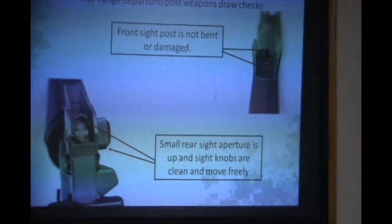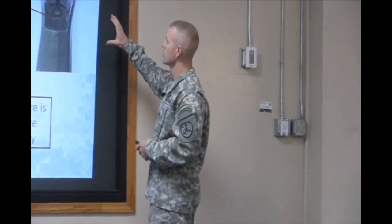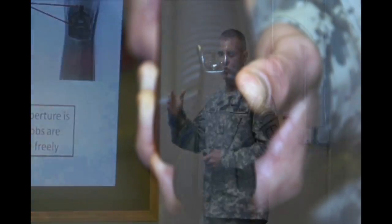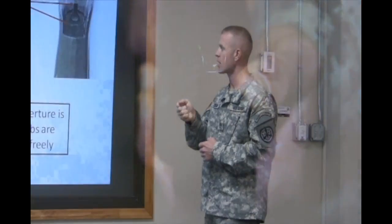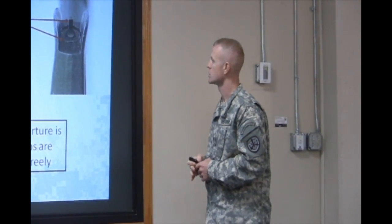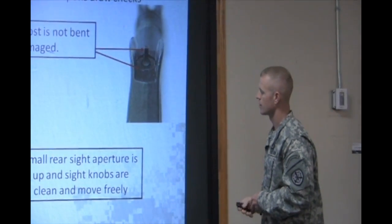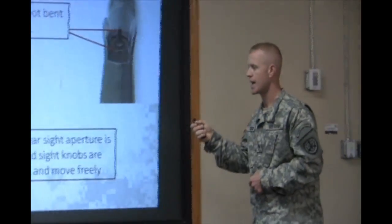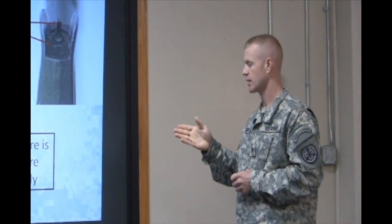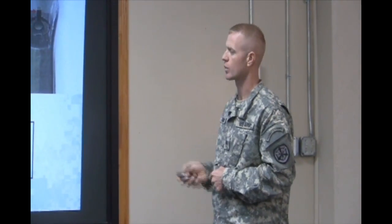Before we zero the rifle, we have some pre-range and post-weapons draw checks we need to look for. If you've never fired the rifle you're drawing out to zero, you're going to want to check the front sight post to make sure it's not damaged — if somebody's grabbed it with a pair of pliers and tried to turn it without pushing down the detent, that damaged front sight post is going to make it very hard to zero the rifle. Make sure the front sight post is not bent, and make sure the base of the front sight post is flush with the front sight housing.